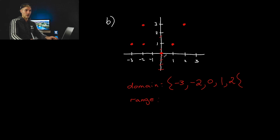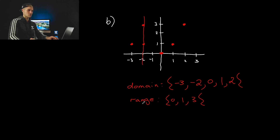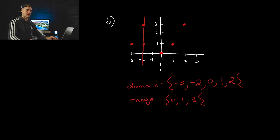For the range, reading from the lowest Y value upward: Y = 0, then three points at Y = 1, then Y = 3. That's the range. And this relation fails the vertical line test — there are two points with an X value of -2, so this is not a function.